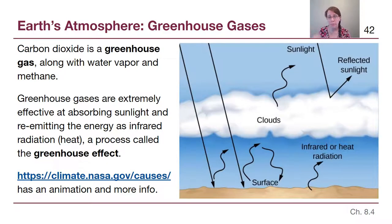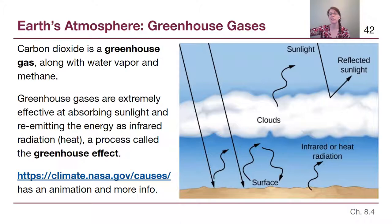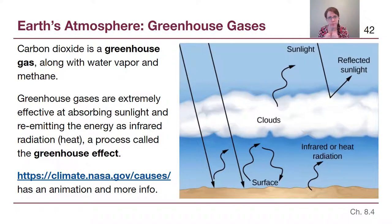Some amount of greenhouse gases are useful to have around. If we had no atmosphere whatsoever, it would be significantly colder on Earth based on our distance from the sun and the amount of sunlight the sun produces. So it's nice to have a blanket on a cold night — but we don't just have a small amount anymore.